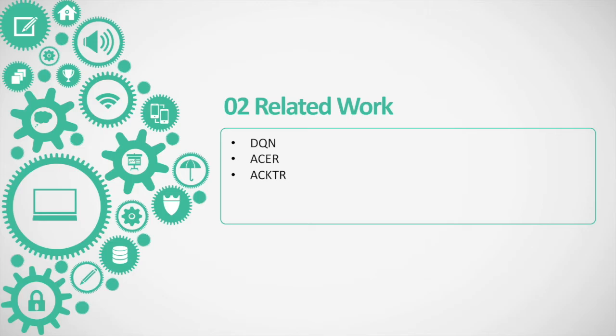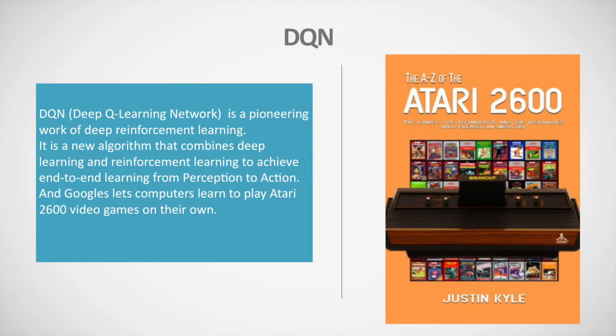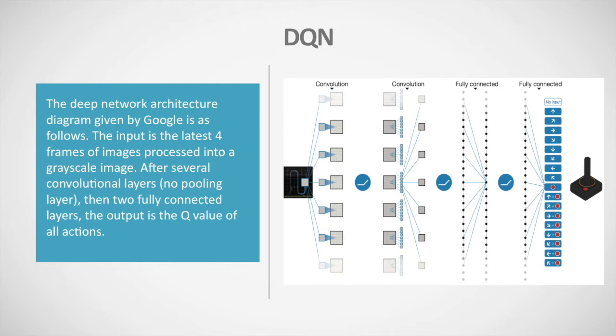The second part is related work. I will introduce one of the technologies we used: DQN, which stands for Deep Q-Network. DQN is a primary work of deep reinforcement learning — a new algorithm that combines deep learning and reinforcement learning to achieve end-to-end learning from perception to actions. Google led computers to play video games on their own and found that computers play much better than human beings. The deep network takes the latest four frames as input, converts them to grayscale, passes through convolutional layers and two fully connected layers, and outputs Q-values for all actions.